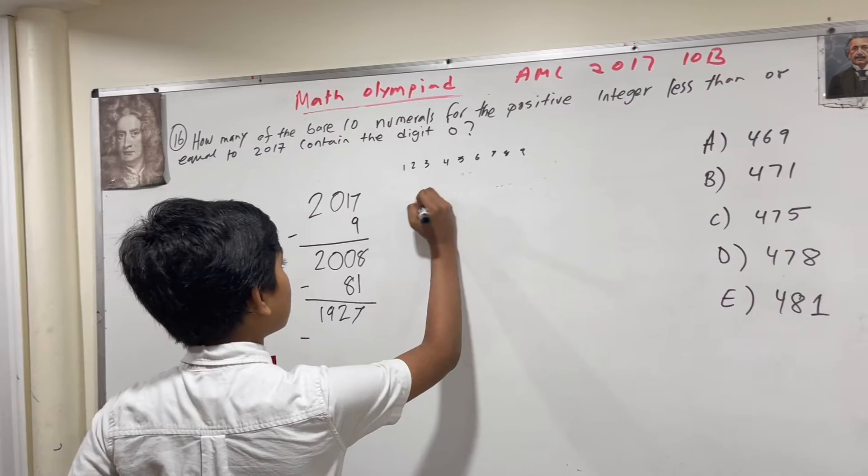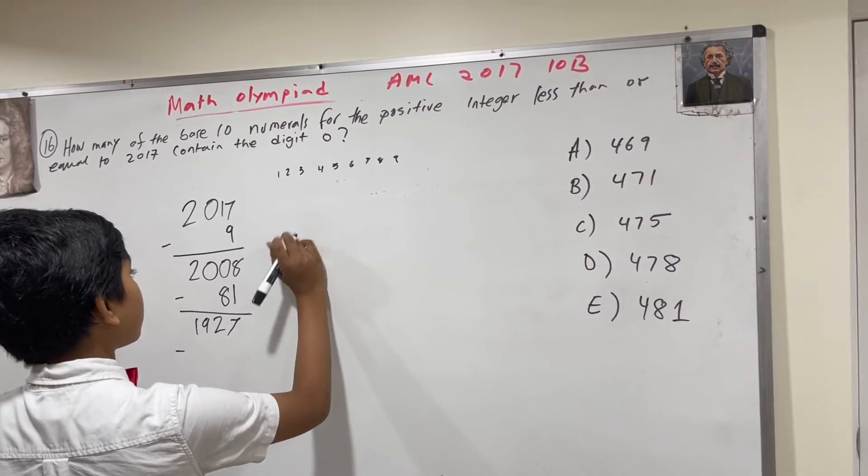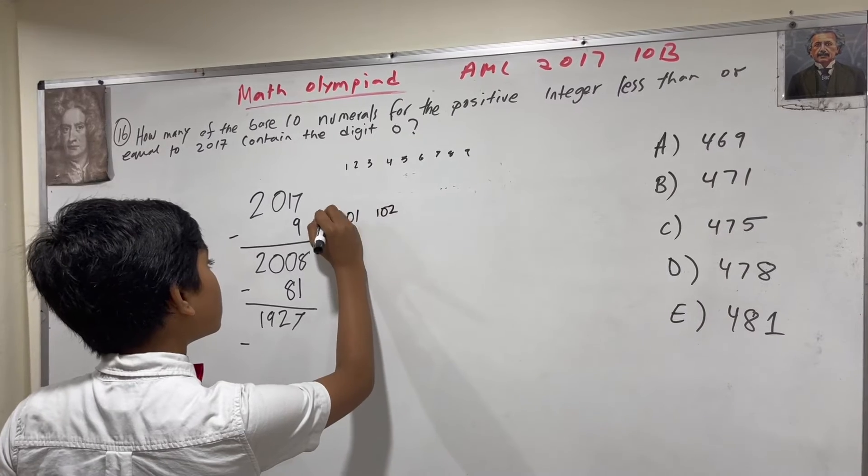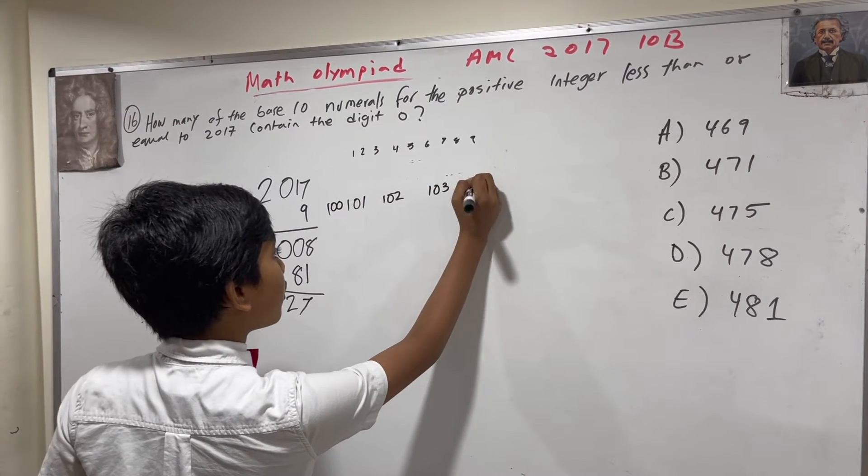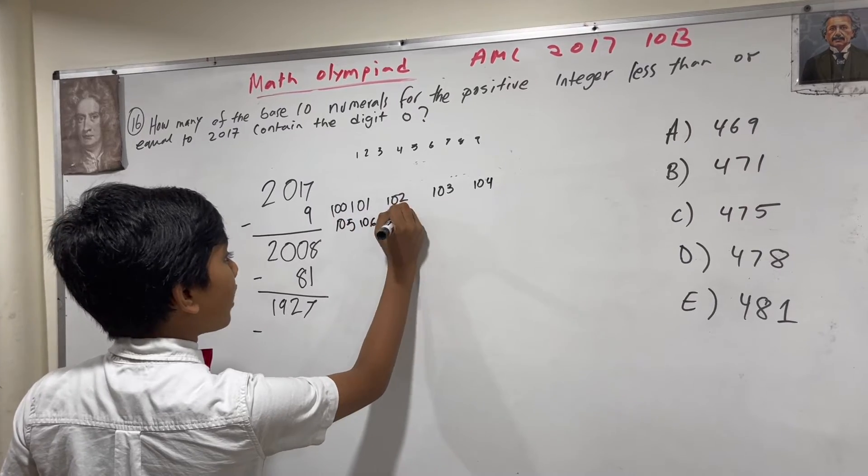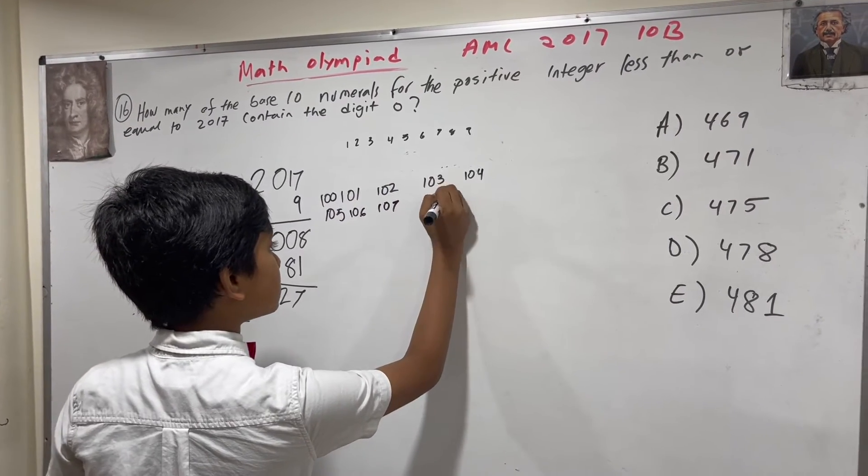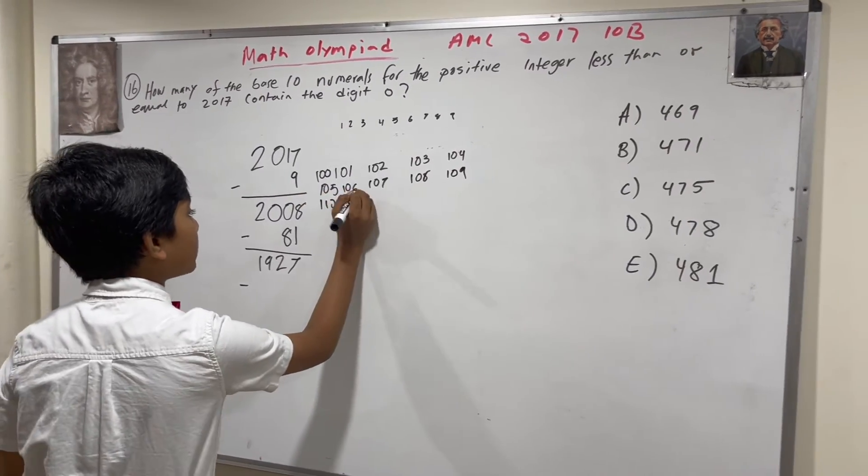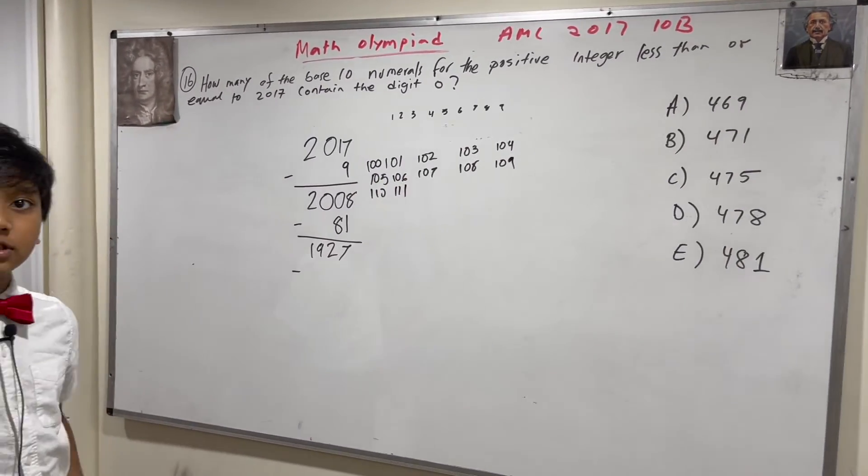So, like, for example, there are 101, 102, 103, 104, 105, 106, and all the way until 111. That's when there was no 0 here.